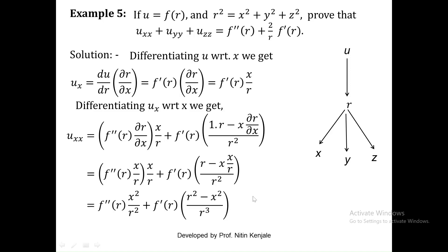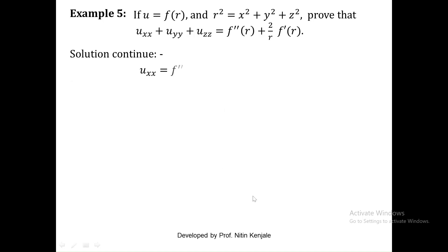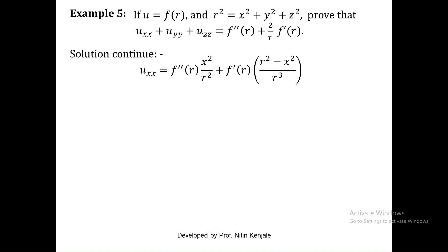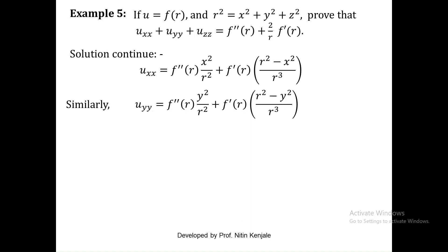Let me carry this result forward to the next slide. So we have uxx as that expression. On similar lines you can write uyy and uzz — all you need to do is replace x by y and x by z respectively wherever x appears. So uyy and uzz are given accordingly.